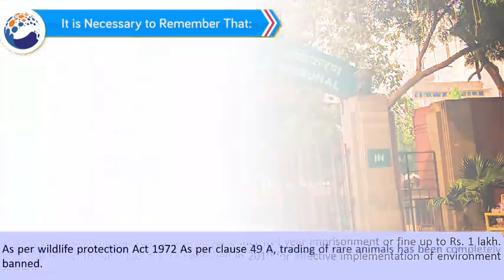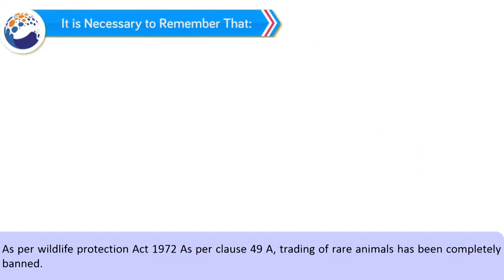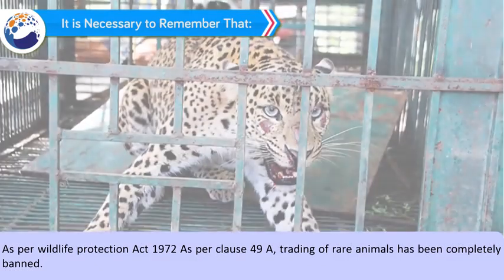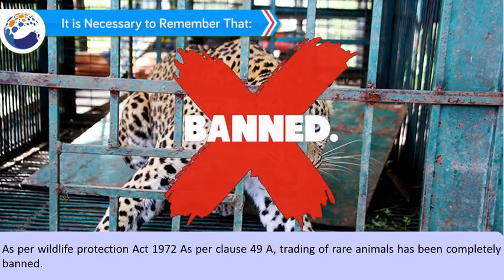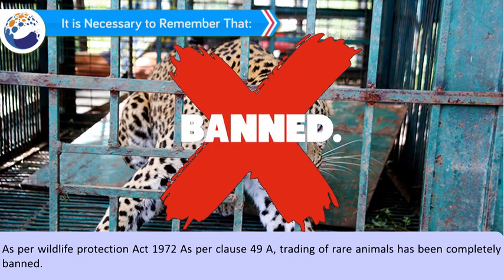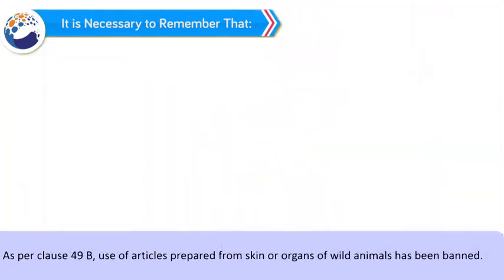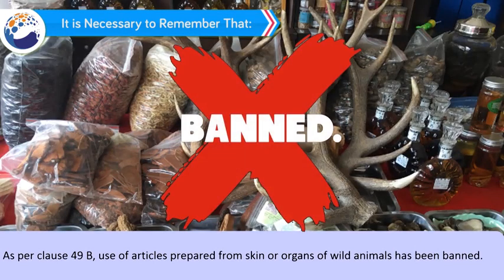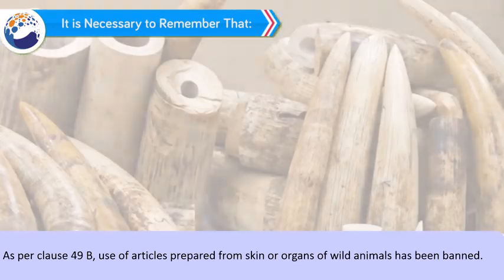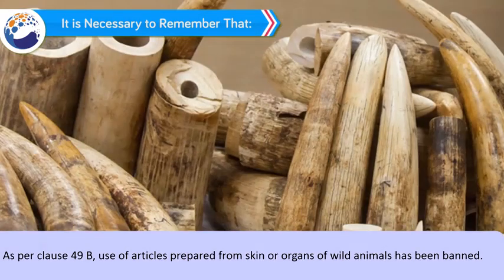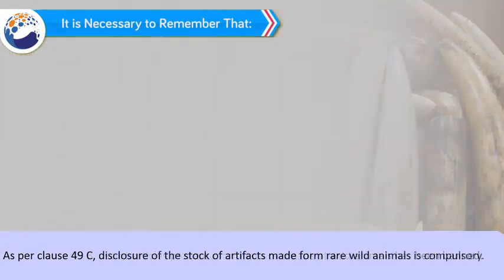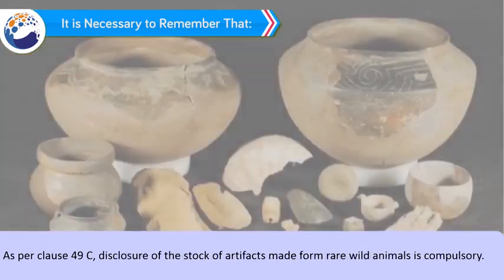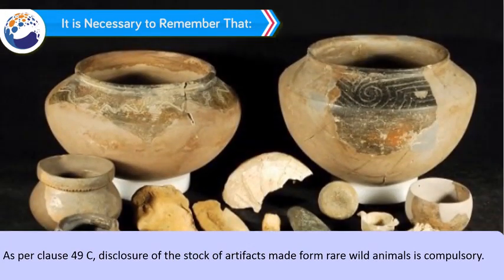As per Wildlife Protection Act 1972, Clause 49A: trading of rare animals has been completely banned. As per Clause 49B: use of articles prepared from skin or organs of wild animals has been banned. As per Clause 49C: disclosure of the stock of artifacts made from rare wild animals is compulsory.